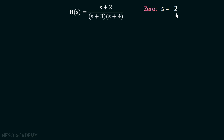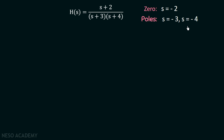Similarly, if we talk about poles of this transfer function, poles are the values of s for which the denominator becomes zero — or in other words, the transfer function becomes infinite, because if the denominator equals zero the fraction becomes infinite. So equating the denominator equal to zero, we get the poles at s = −3 and s = −4. That means there are two poles: −3 and −4.